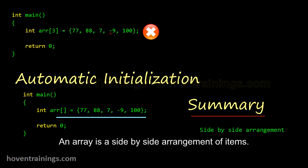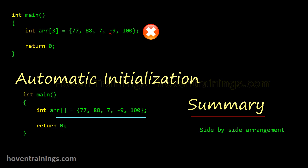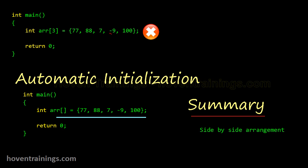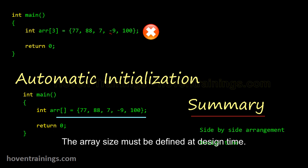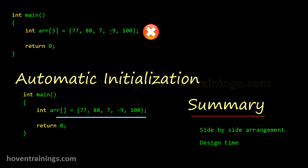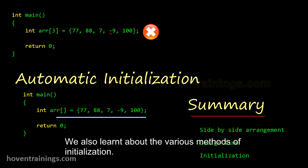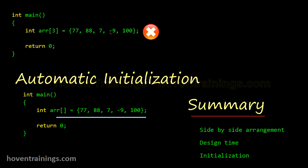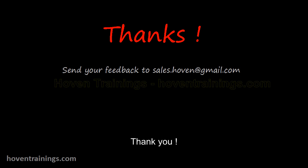To summarize: an array is a side-by-side arrangement of items where all items must be of the same type, and the array size must be defined at design time. We also learned about the various methods of initialization. Thank you.